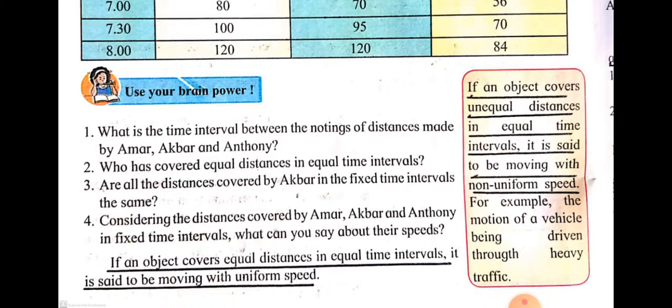If an object covers equal distances in equal time intervals, it is said to be moving with uniform speed.